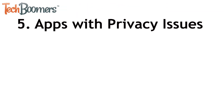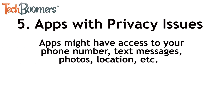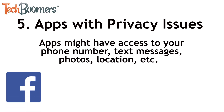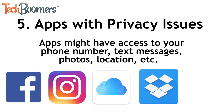The fifth type of app to remove from your iPhone are apps with privacy issues. Some apps may have access to information you don't want them to be able to access, like your phone number, text messages, photos, location, and more. Apps that may be accessing your data without you realizing include social media apps like Facebook and Instagram, cloud storage apps like iCloud Drive and Dropbox, gaming apps, weather apps, and more. You can control what data an app has access to in your settings.